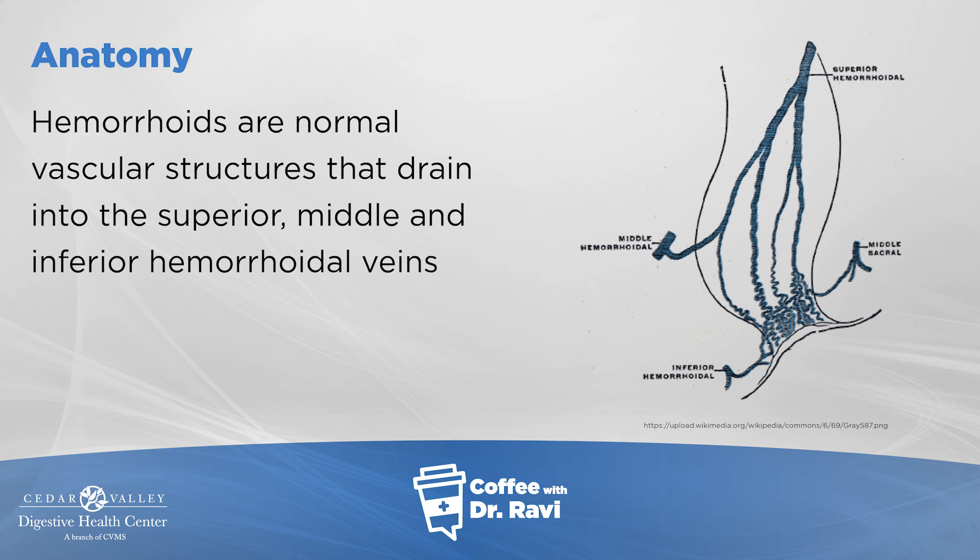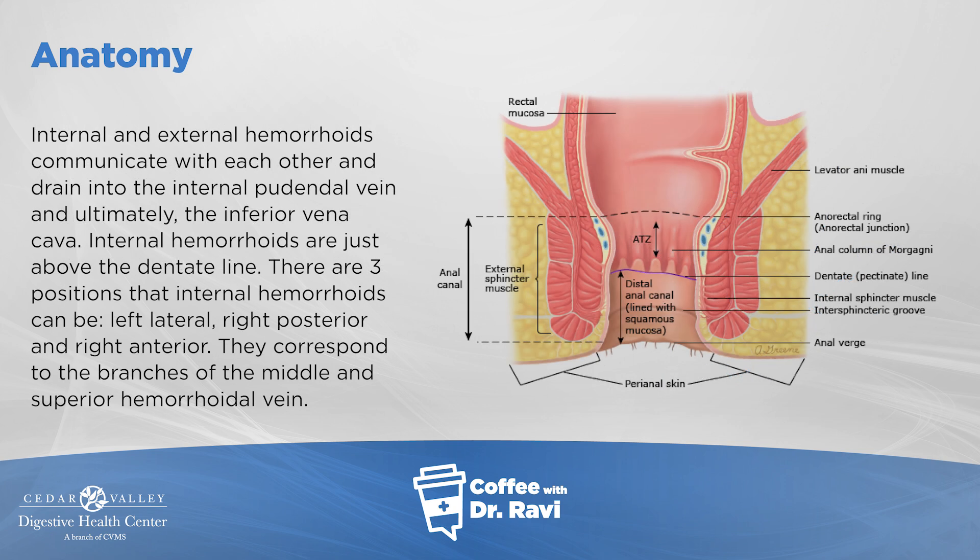Hemorrhoids drain into the superior, middle, and inferior hemorrhoidal veins, which drain into the inferior vena cava, and the blood then travels to the heart — so these are venous structures. Internal and external hemorrhoids communicate with each other; they are not separate. Internal hemorrhoids are above the dentate line, which is the transition zone between the skin entering the anal canal and the internal lining.